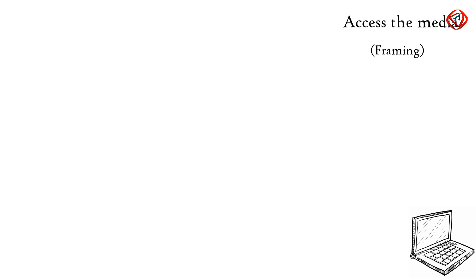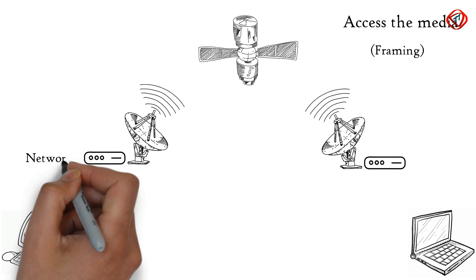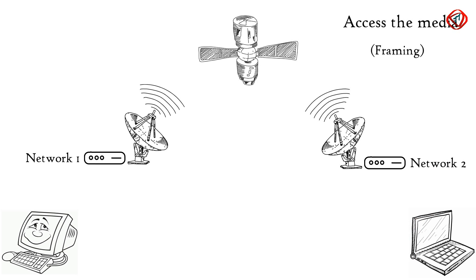Consider two distant hosts, a laptop and a desktop, communicating with each other. As laptop and desktop are connected to different networks, they will be using network layer protocols to communicate with each other.